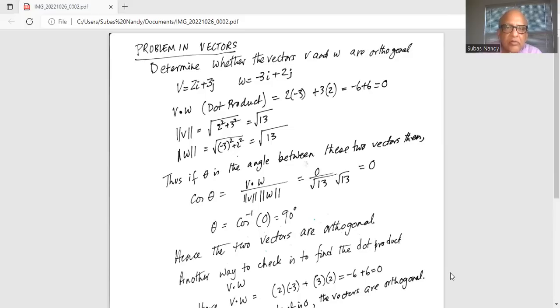So v dot w, we multiply the coefficients of i and the coefficients of j and add the product of the two coefficients. So it's 2 times minus 3 plus 3 times 2, minus 6 plus 6 is 0.